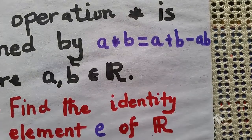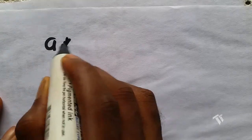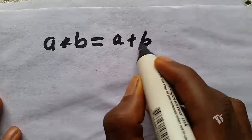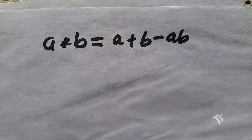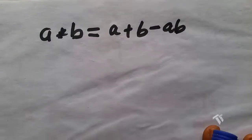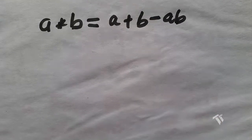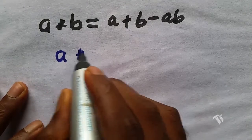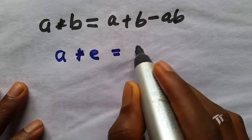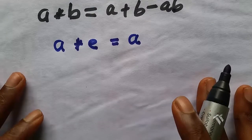To solve this problem we use the operation to find the identity element. First, write down the operation: a★b = a + b − ab. We know that whenever you operate a number a on the identity element e, you should always get back the number a.